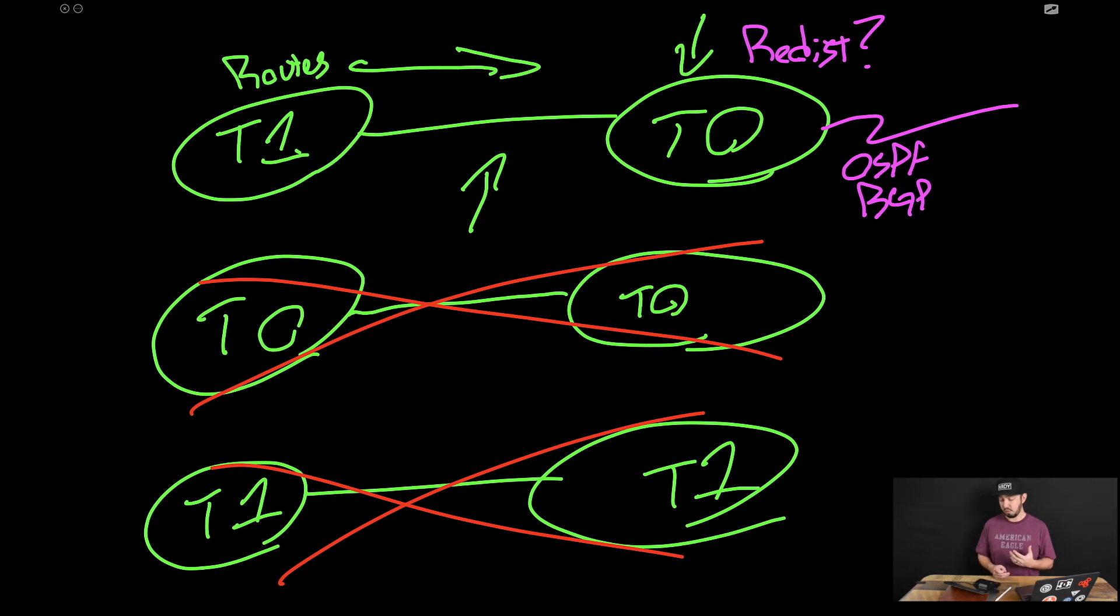Now, typically what I've seen is for the T0, inbound from the physical network, we'll just send a default route. So in this case, we would have like 0.0.0.0, right? Just a default route being advertised into that T0. And it now advertises that out to the rest of the environment, right? So that's pretty much how it's worked or how it works in most cases that I've seen.